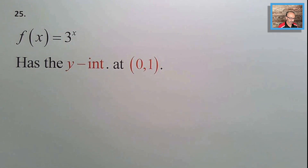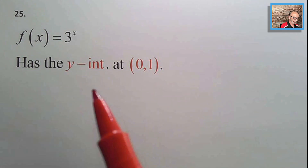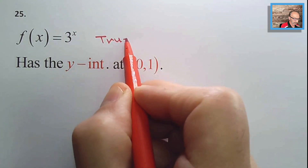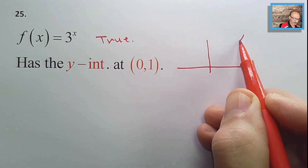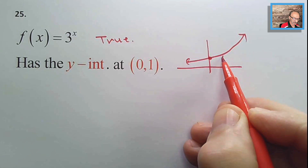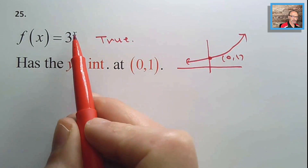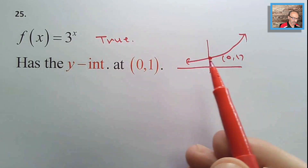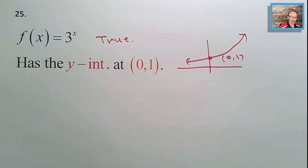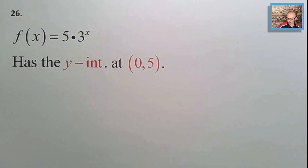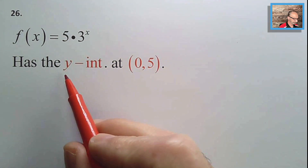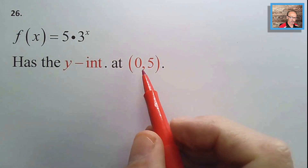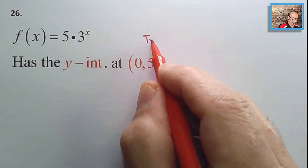Number twenty-five: 3^x has a y-intercept at (0, 1) — true. With no transformations the graph passes through (0, 1). Number twenty-six: 5·3^x has a y-intercept at (0, 5) — true. For a·b^x, the y-intercept is (0, a). Here a = 5, confirmed by substituting x = 0: 5·3⁰ = 5.